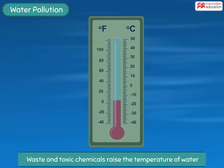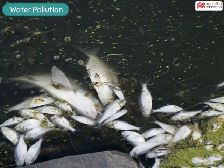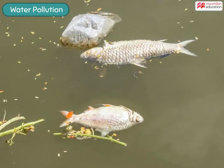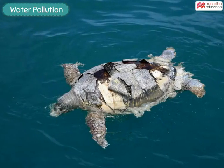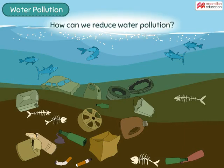Addition of waste and toxic chemicals to water also raises the temperature of water by many degrees. A rise in temperature alters the life cycle of many aquatic organisms and can even kill the plants and animals living in water. Water pollution has serious effects on us and our environment.